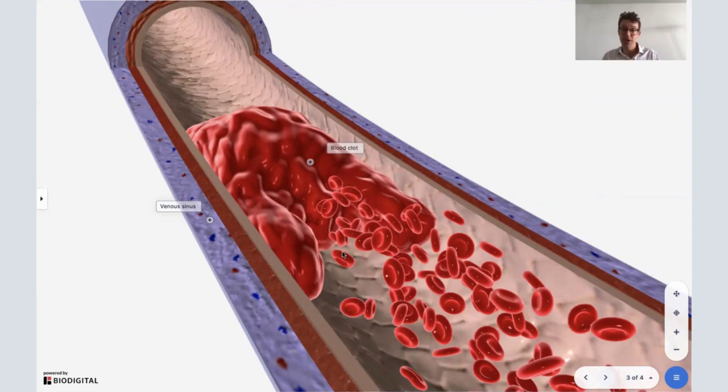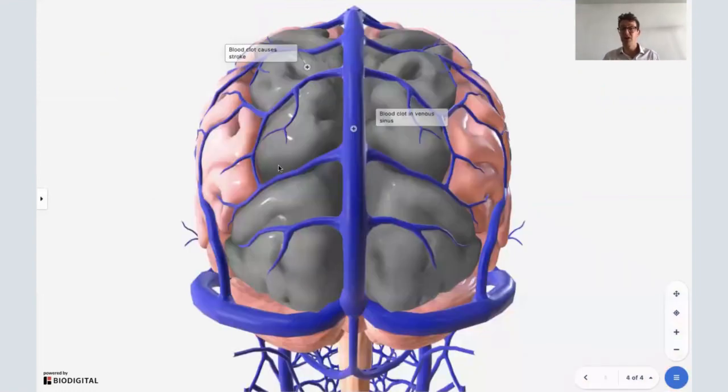And what happens when you get a blood clot in one of these venous sinuses is the blood itself can actually spill out. It can't get past this to go back to the heart, and it can spill out. And in so doing, if we go back to the brain, it can cause a stroke.